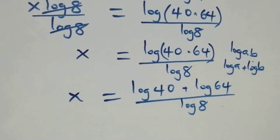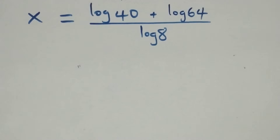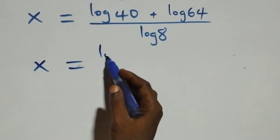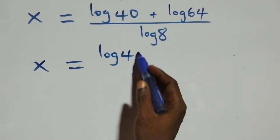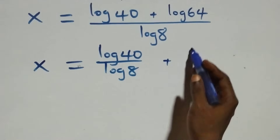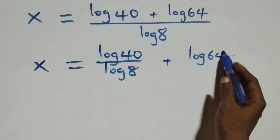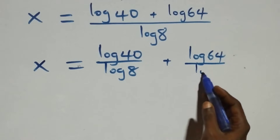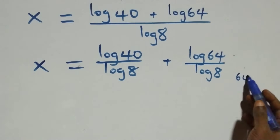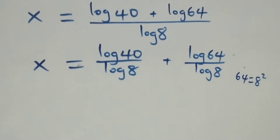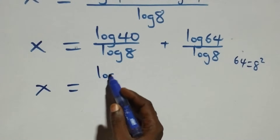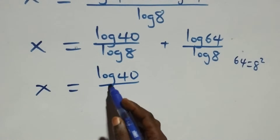We separate this into two fractions: x equals log 40 over log 8, plus log 64 over log 8. We can also write 64 as 8 squared.